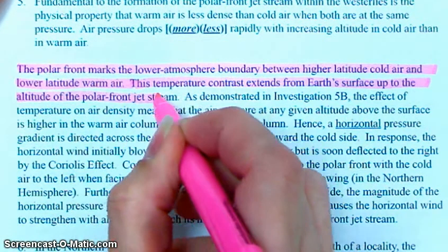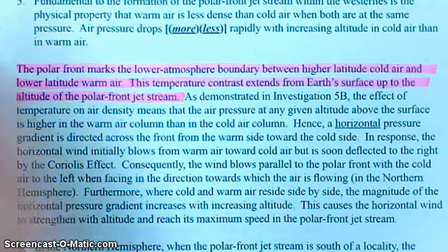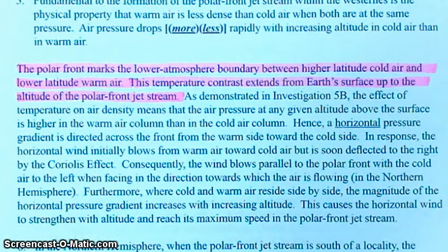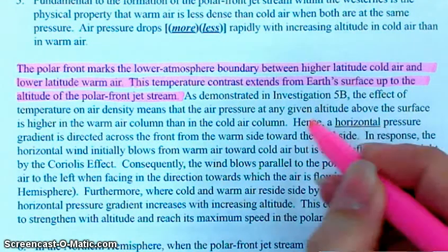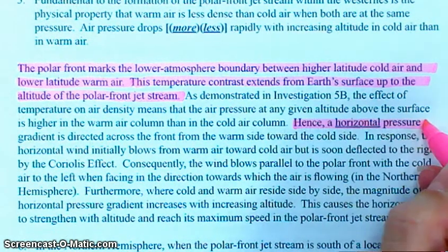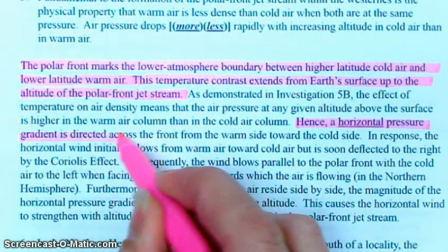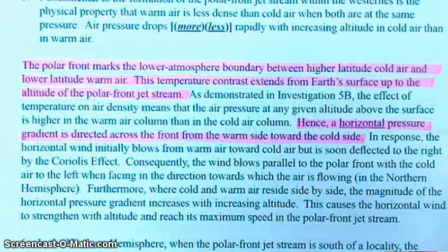We have warm air sitting next to cold air. As demonstrated in Investigation 5B — that's the one we did for Bellwork the other day — the effect of temperature on air density means that the air pressure at any given altitude above the surface is higher in the warm air column than in the cold air column. Hence, there is a horizontal pressure gradient directed across the front from the warm side to the cold side.